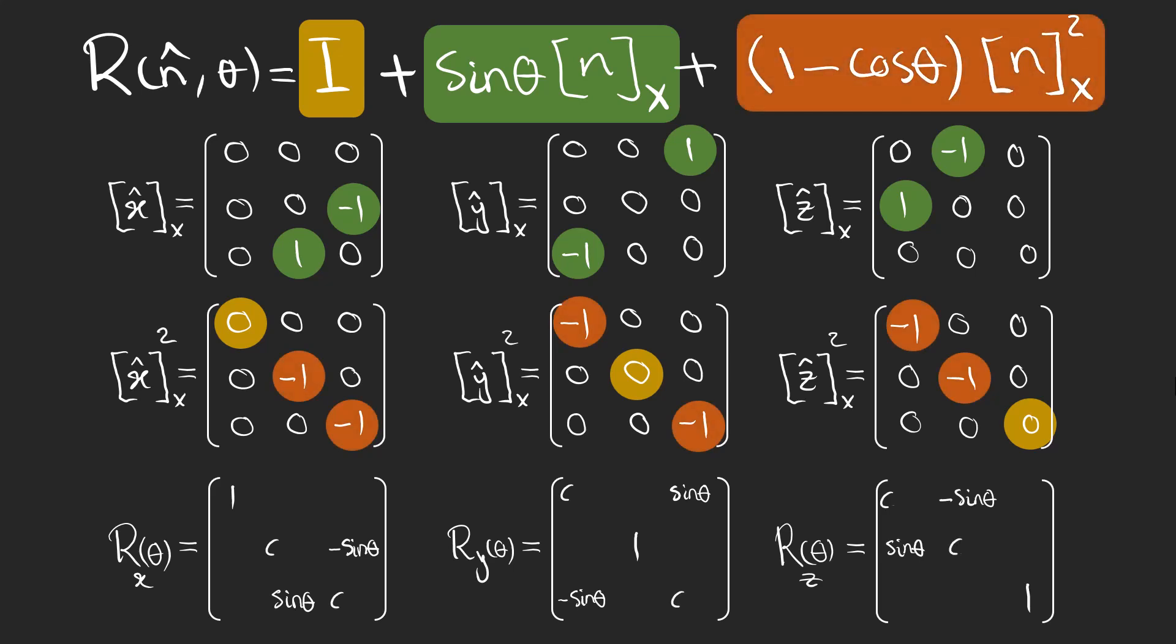And finally, these elements being multiplied by 1 minus cosine theta and added by the identity matrix account for the cosines in these three matrices. And all the other elements are, of course, 0.